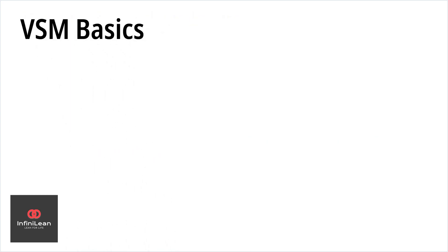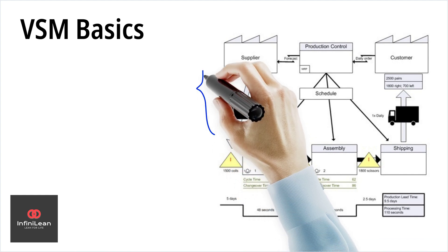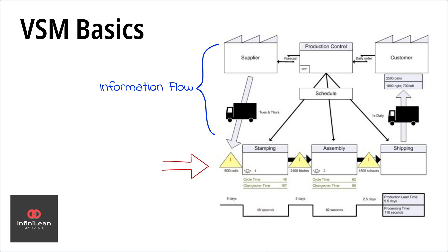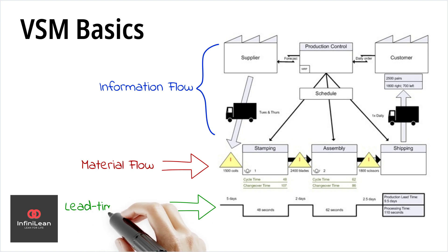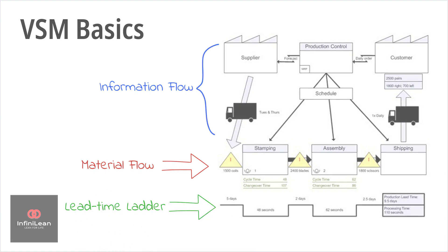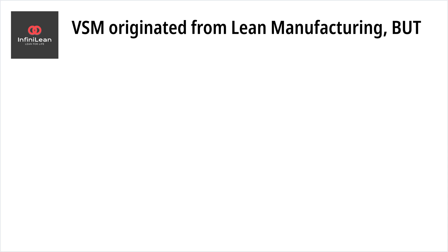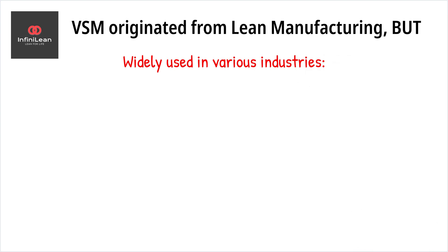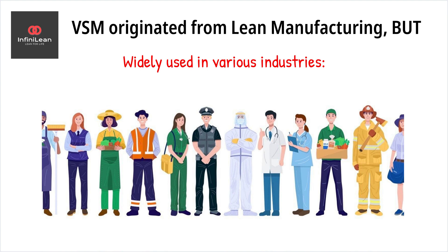Let's start with the basics. Value stream mapping, or VSM, is a visual tool that represents the flow of materials, information, and all the actions involved, both value-added and non-value-added, as they move through the production process. VSM originates from lean manufacturing principles, but it is widely used in other industries, such as services, healthcare, and even software development to identify, analyze, and improve the delivery of products or services to customers.